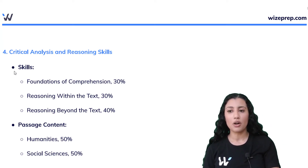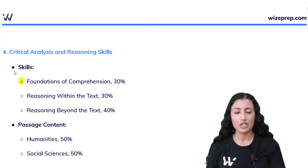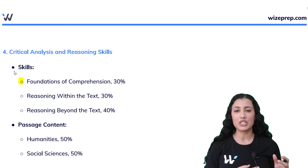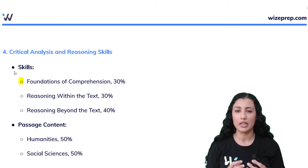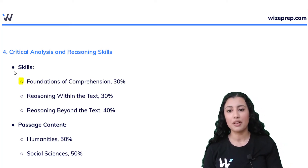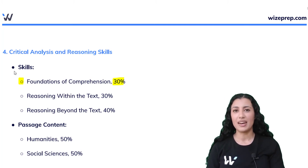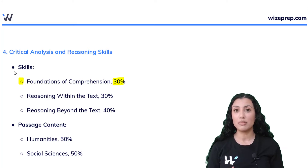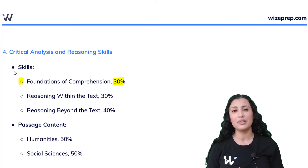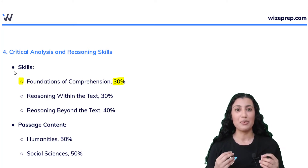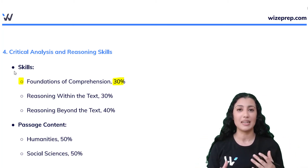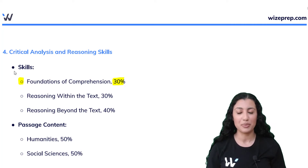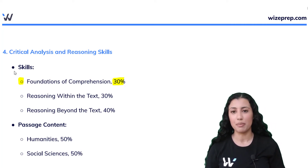The skills for CARS involve foundations of comprehension. When you're reading through the passage, some questions will test how well you can comprehend the information you just read, and 30% of the questions will be based on that. It sounds easy because you have the passage right in front of you, but it's a lot more difficult than it sounds. The MCAT is known for choosing wacky passages — very random, some more complex than others — and it is timed, so we have very limited time to go through each passage.